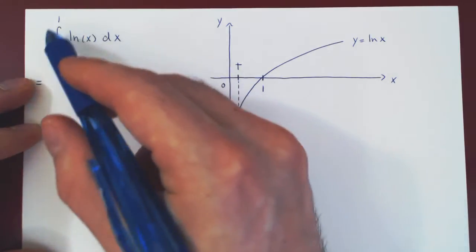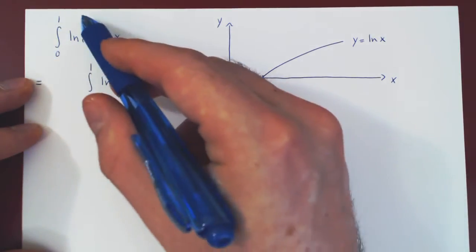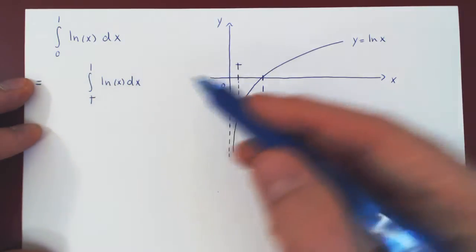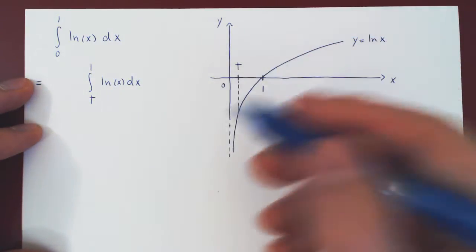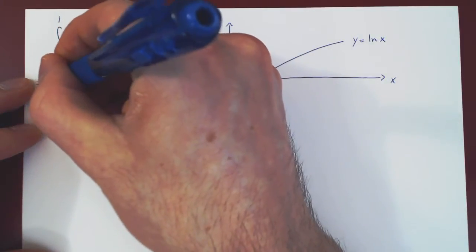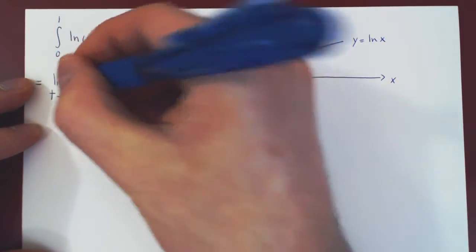To obtain the original improper integral from this one, we have to let t approach 0, and this will do it, but we have to be careful.